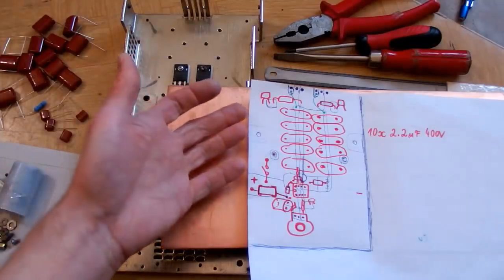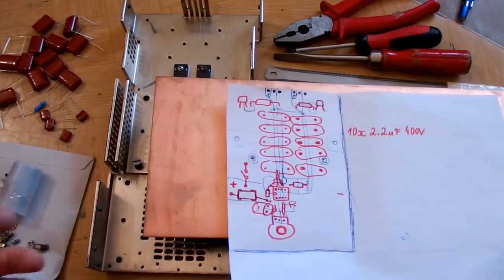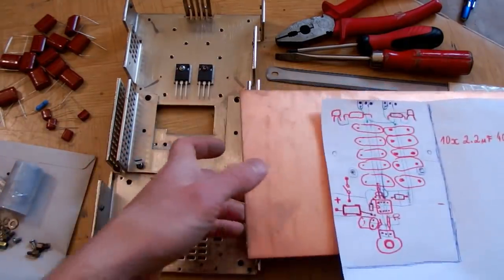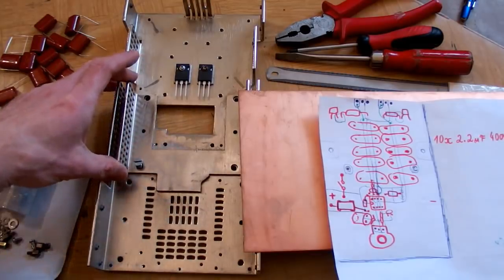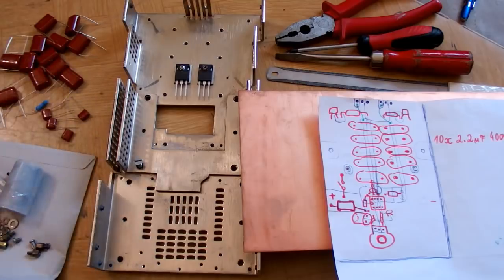So this is my very crude way of prototyping something or making something that's never going to go into series production anyway. And this heatsink is actually copper but it's of course plated with something. It's from some 90s server power supply probably.